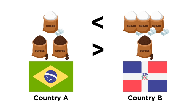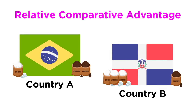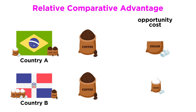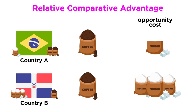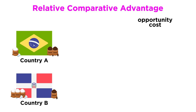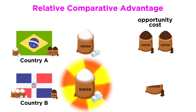But now let's look at a more accurate way to conceptualize specialization, which is through their relative comparative advantage. For country A, the opportunity cost of one ton of coffee is half a ton of sugar. For country B, the opportunity cost of one ton of coffee is three tons of sugar. Since country A has a lower opportunity cost than country B, country A has a comparative advantage in producing coffee. For country A, the opportunity cost of one ton of sugar is two tons of coffee. For country B, the opportunity cost of one ton of sugar is one third of a ton of coffee. Country B has the lower opportunity cost, and therefore has the comparative advantage in producing sugar.